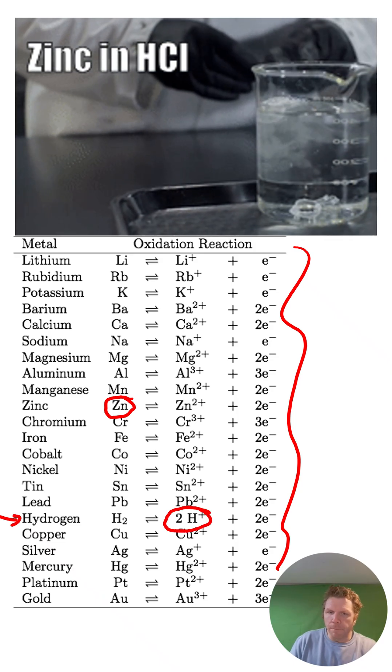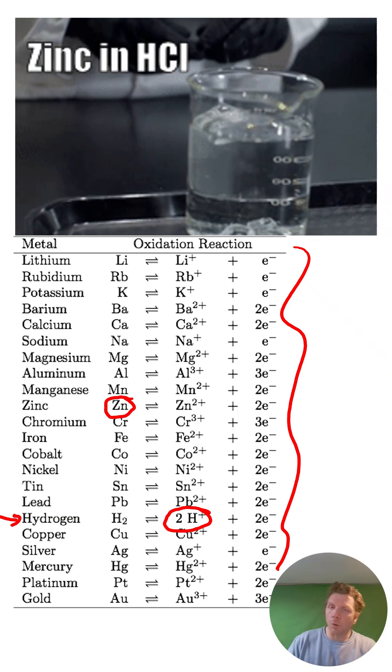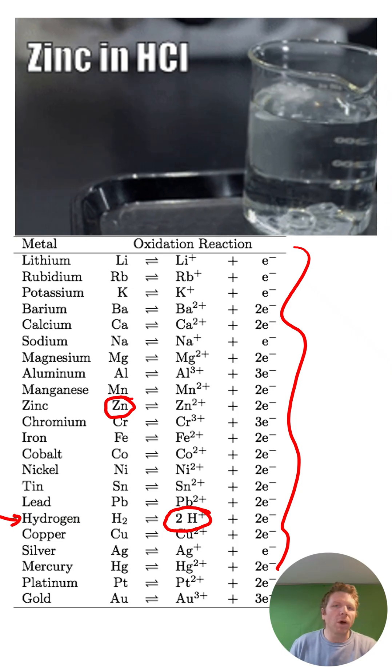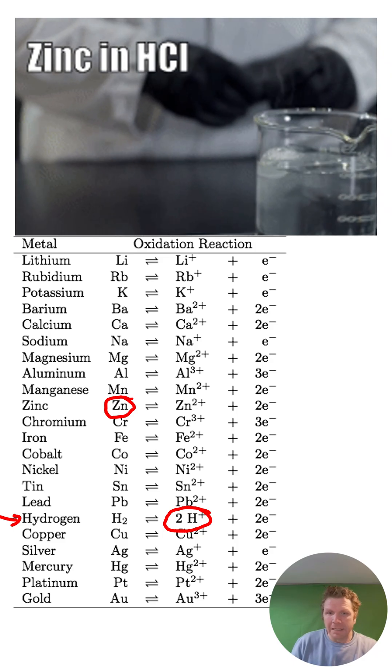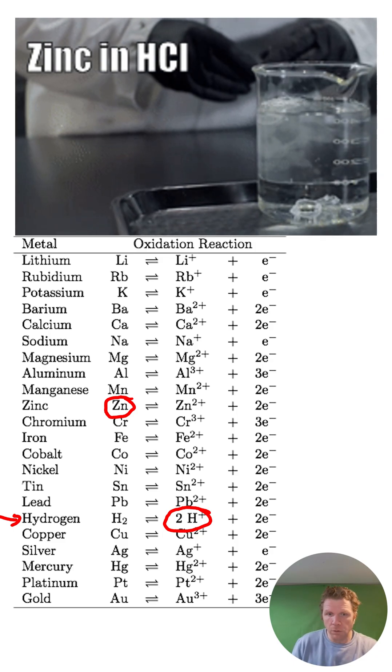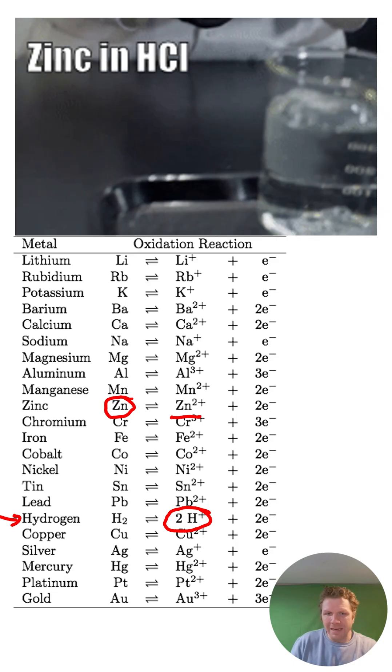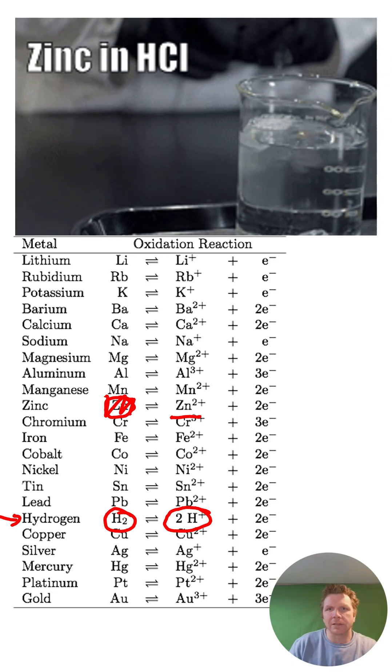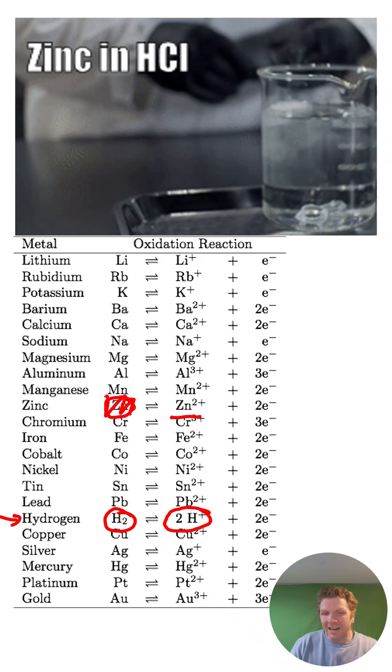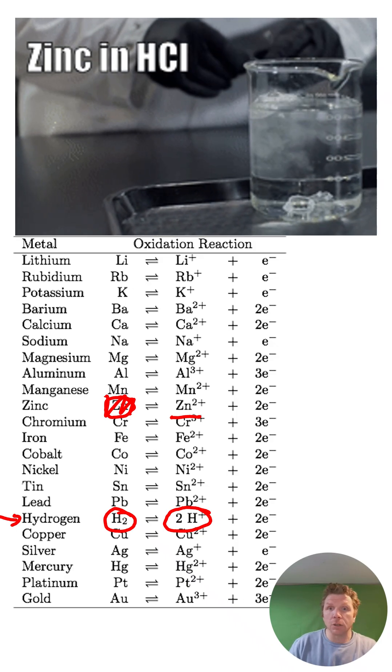Okay, so when the metal is above the ion, a reaction takes place. Now, what is the product of this? Well, one of the products is going to be zinc being converted to Zn2+, and the other is H2, or hydrogen gas. Hydrogen is gaining electrons, and zinc is losing electrons.